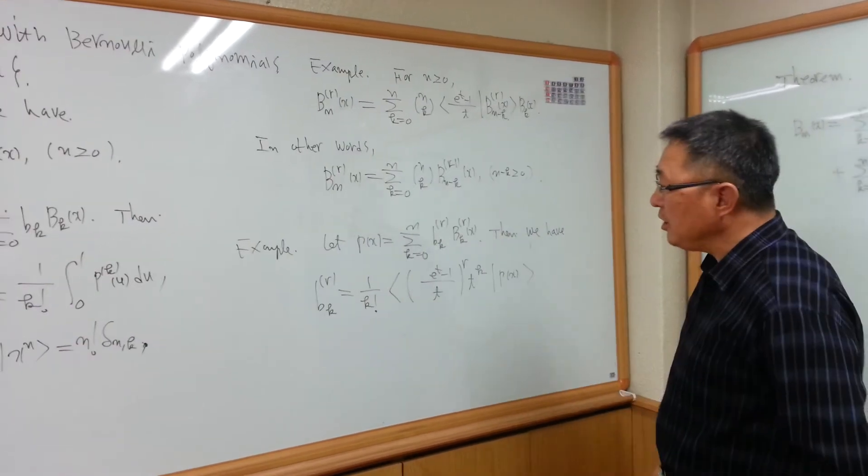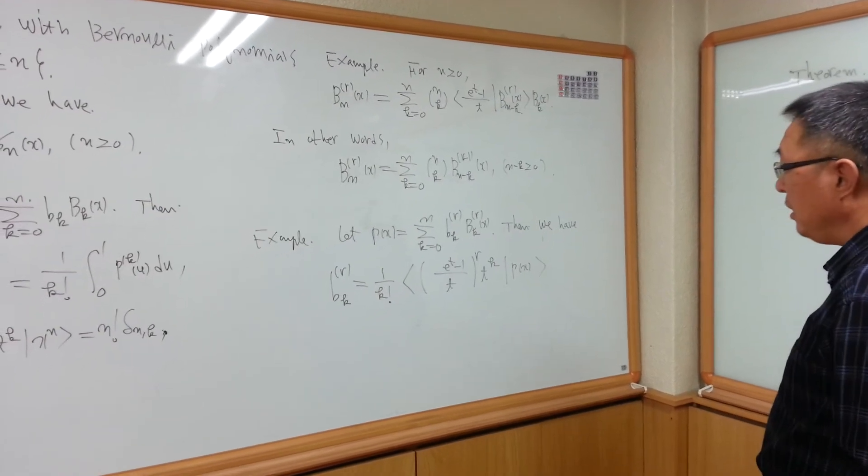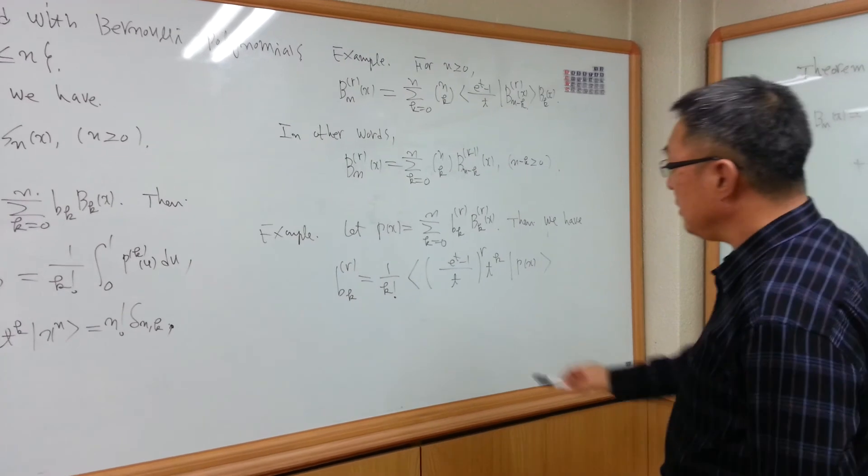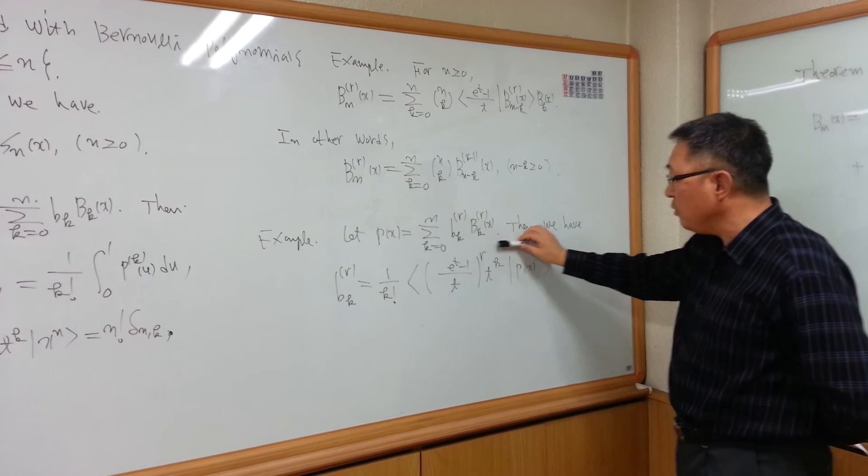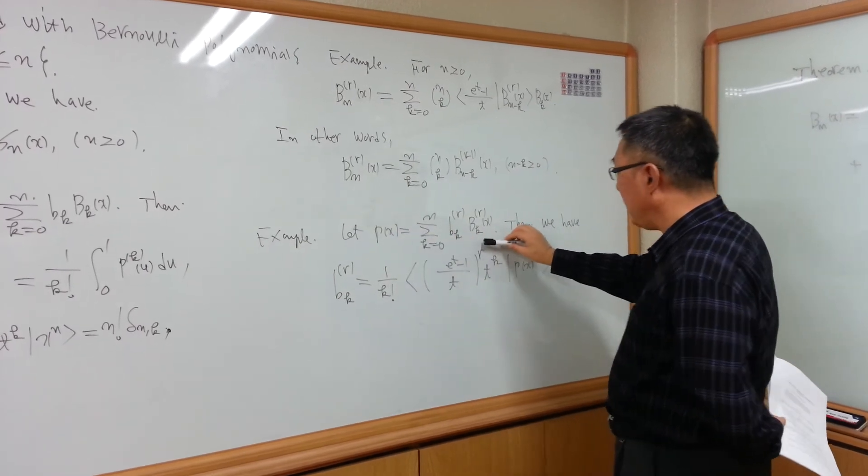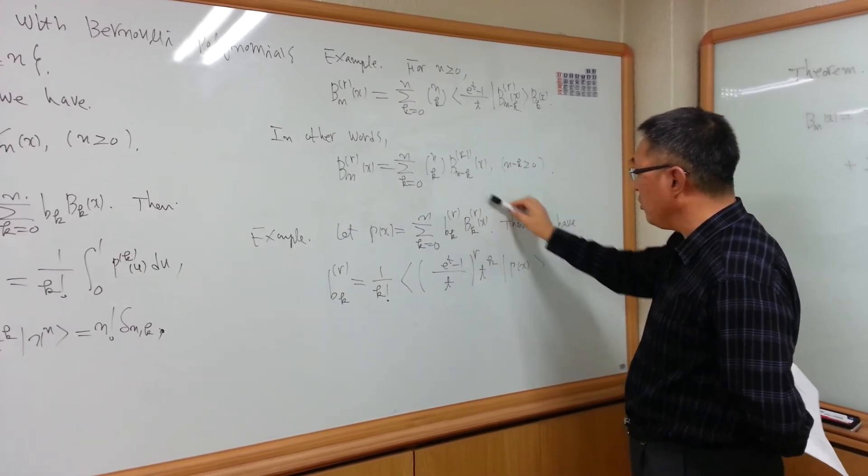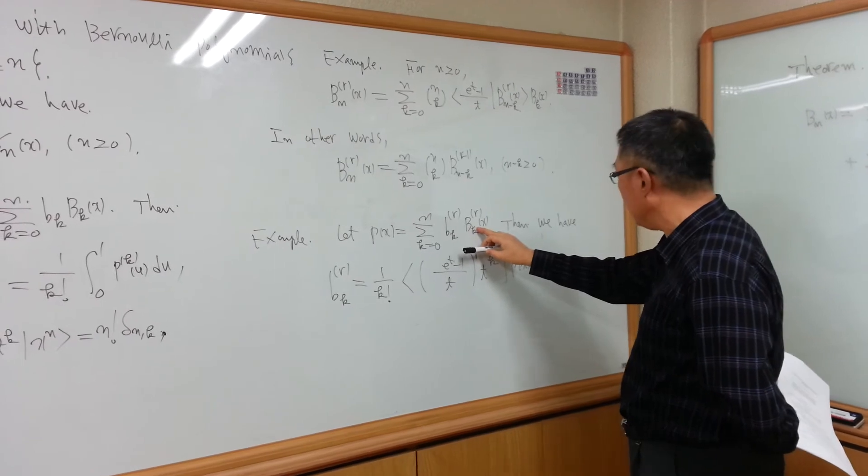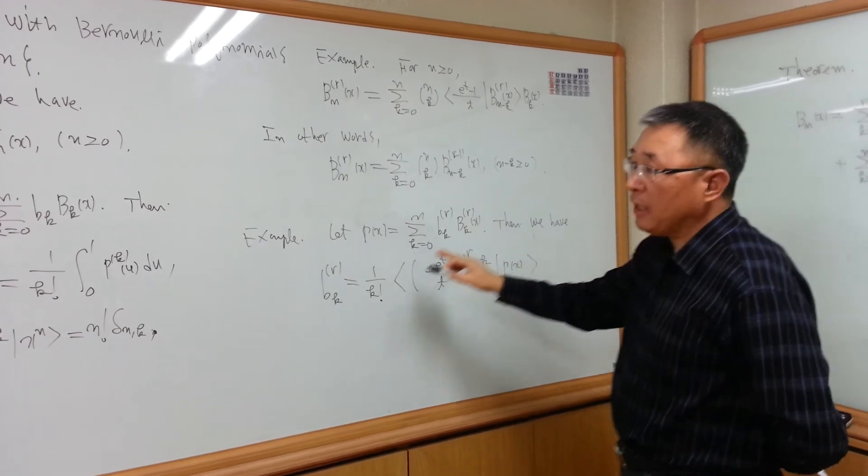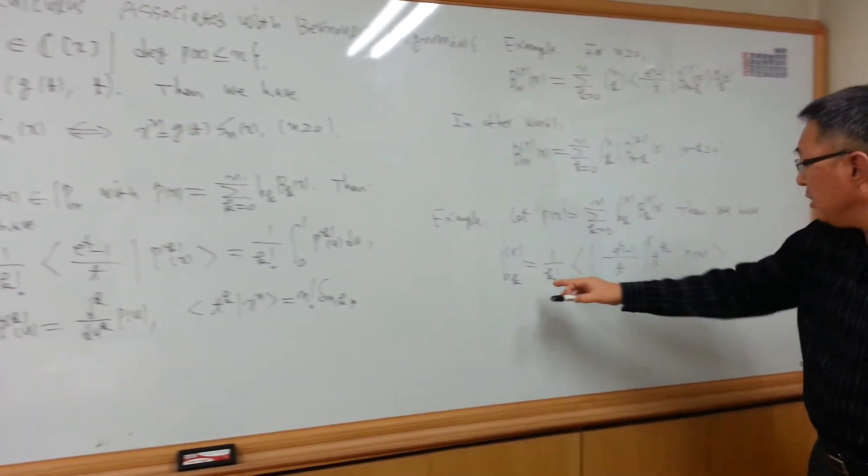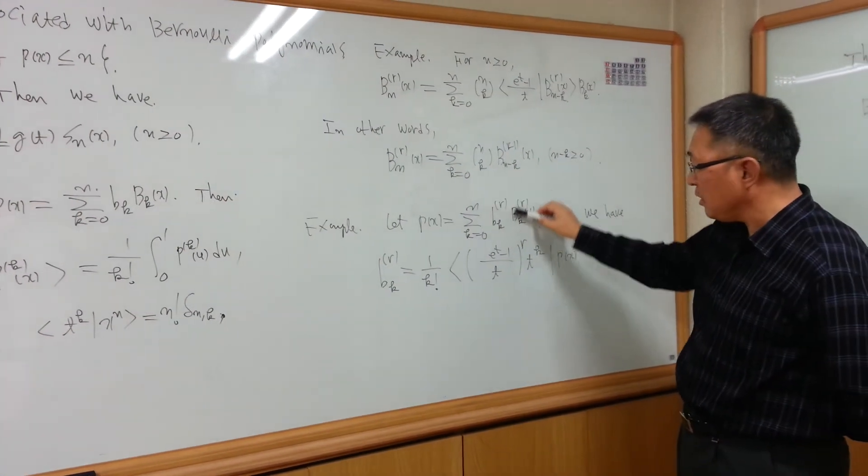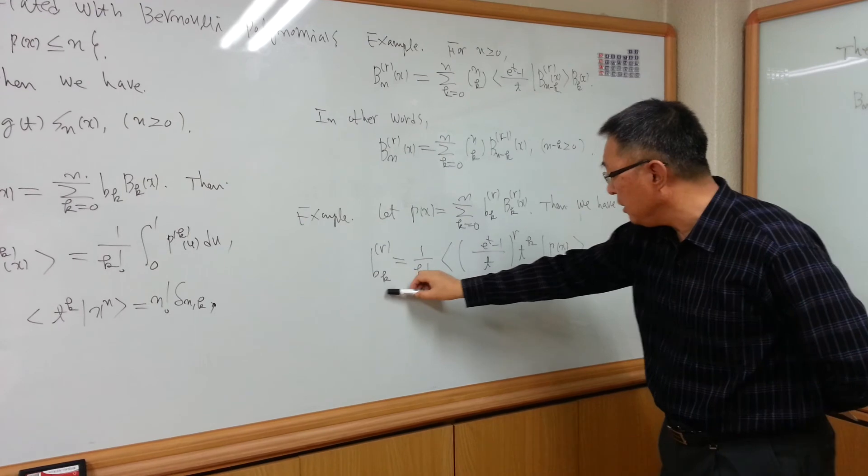The second example: if we let us assume that Px equal to, written by linear combination of high-order Bernoulli polynomials like this. Then by our theorem, we can also derive the coefficient Pkr is like this.